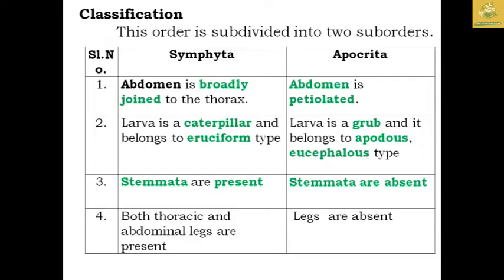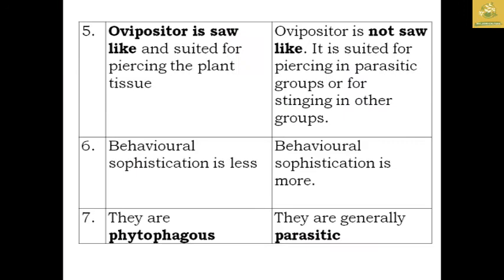Regarding classification, the order Hymenoptera is divided into two suborders: Symphyta and Apocrita. In Symphyta, the abdomen is broadly joined to the thorax, while in Apocrita the abdomen is petiolate. In Symphyta, the larva is caterpillar-like and free-living; in Apocrita it is grub-like or apodous. Stemmata are present in Symphyta but absent in Apocrita. Both thoracic and abdominal legs are present in Symphyta; in Apocrita, legs are absent. The ovipositor in Symphyta is solid and suited for piercing plant tissue, while in Apocrita it is suited for parasitizing or stinging.